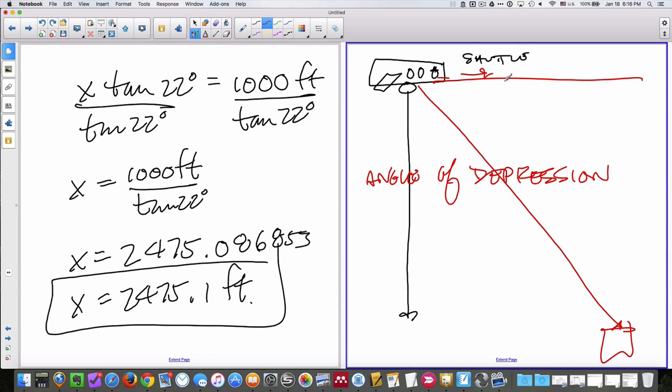So, if you were given an angle of depression, that would be angle of depression. Angle of depression is measured from the horizontal, which this is now the horizontal.